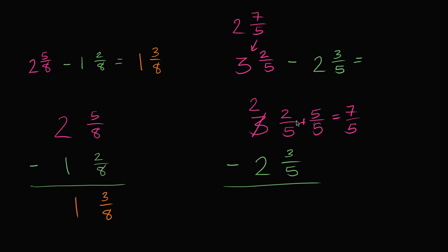So now if we consider this to be 2 and 7 fifths, we're ready to subtract. 7 fifths minus 3 fifths is 4 fifths. And then you have 2 minus 2 is 0. So you're just going to be left with 4 fifths.